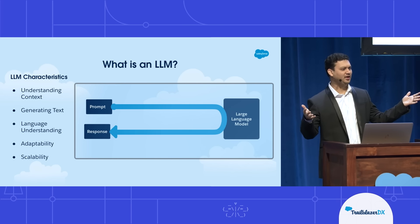LLMs can generate text and code. Any of you using ChatGPT? A lot of you. They can generate code, text, essays — literature. They also have strong language understanding: grammar, idioms, parts of speech. They're adaptable, meaning they're generic to begin with, but you can fine-tune them for specific tasks. And they're scalable — they can be trained with new data, and new models keep coming out.